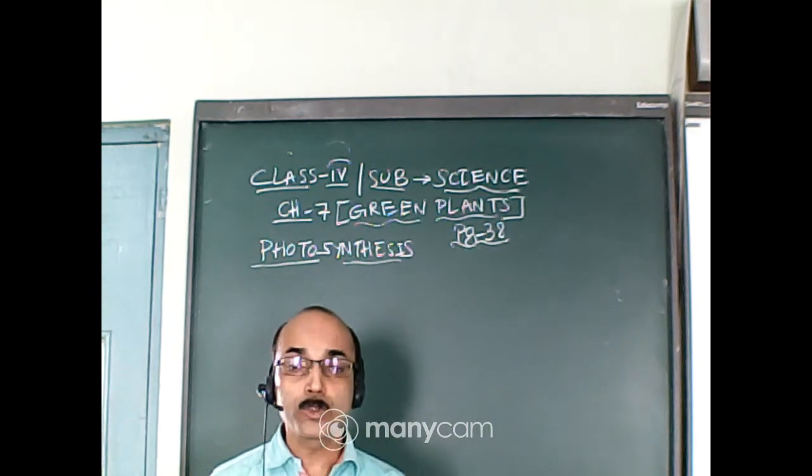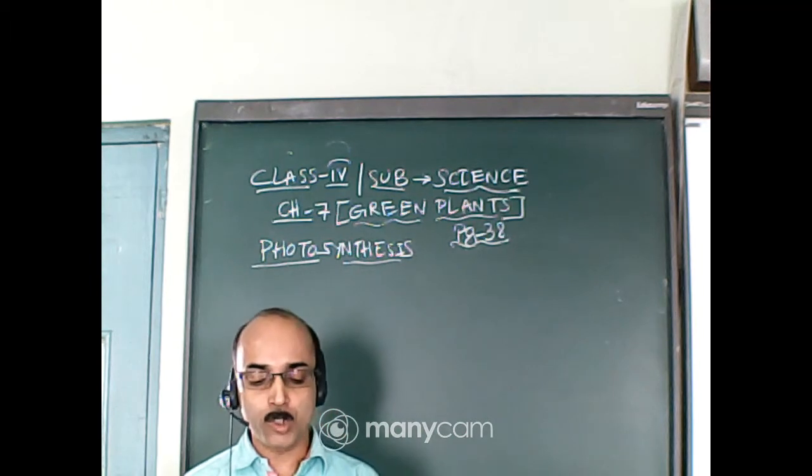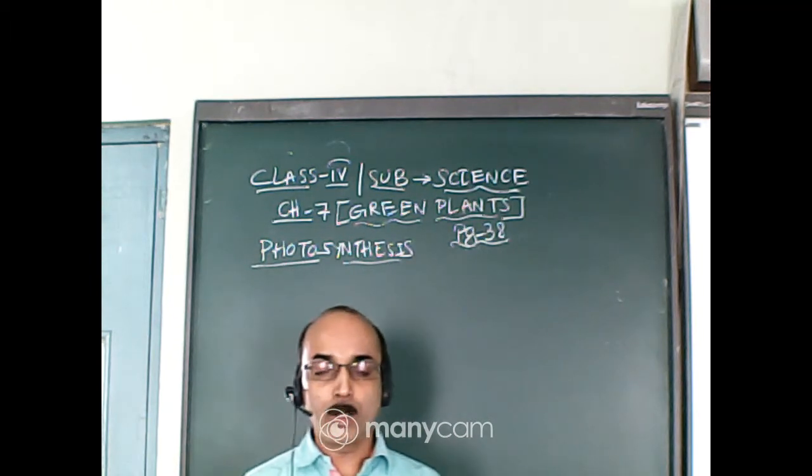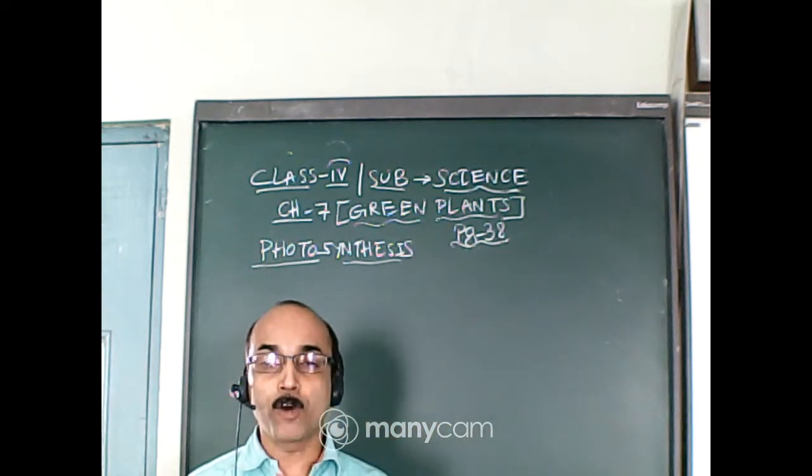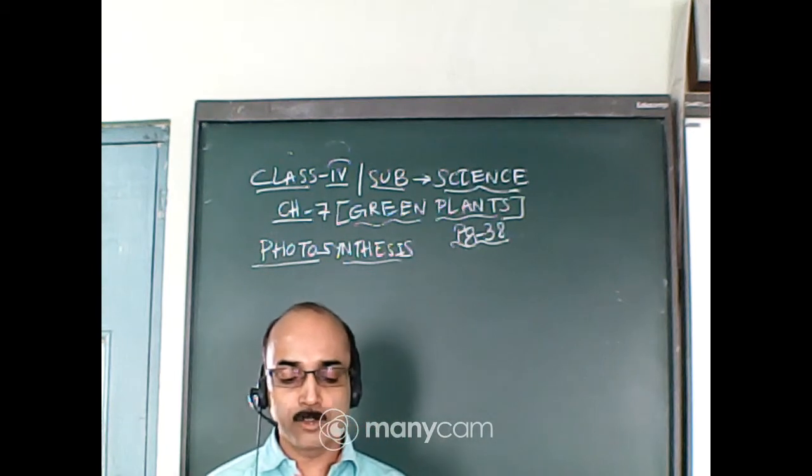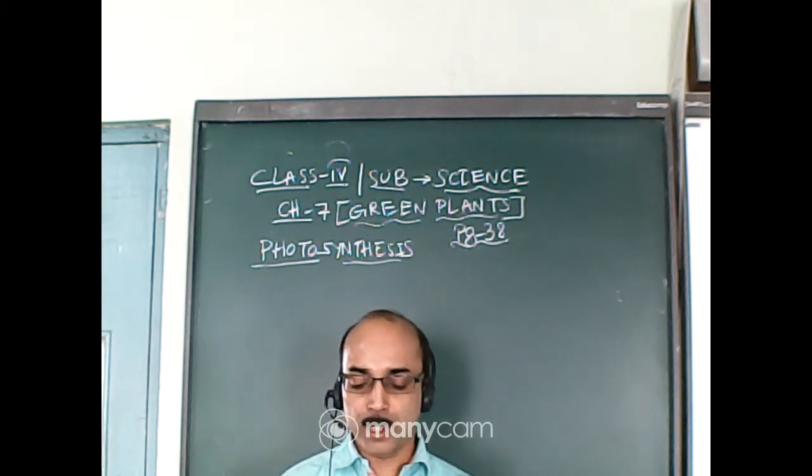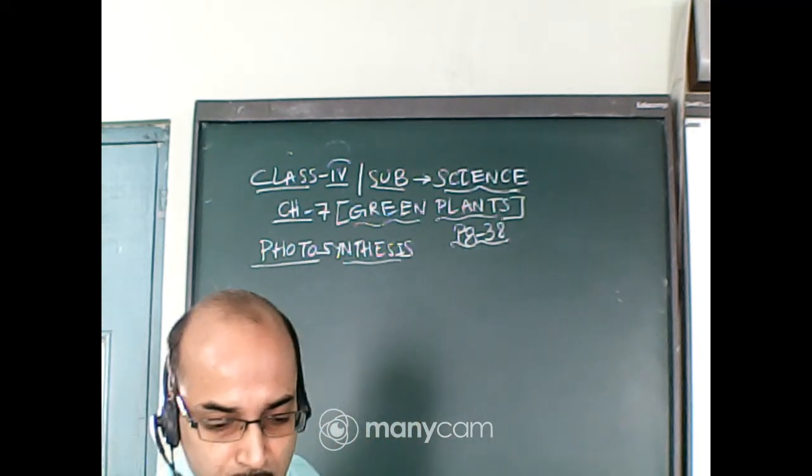Now how do plants use their food? Plants use their prepared food, glucose, in the following ways. Number one, they burn it to produce energy. Number two, they use it for their growth and to repair damaged cells and tissues. And number three, they store extra food in the form of starch in different parts like roots, stem, leaves, fruits, or flowers.